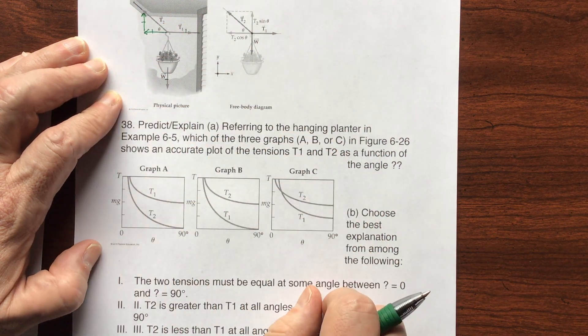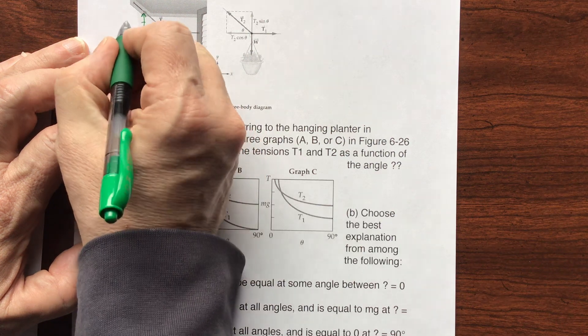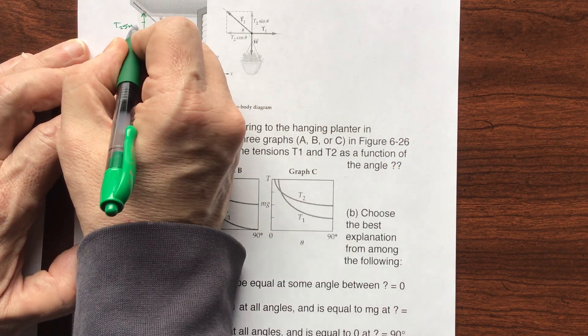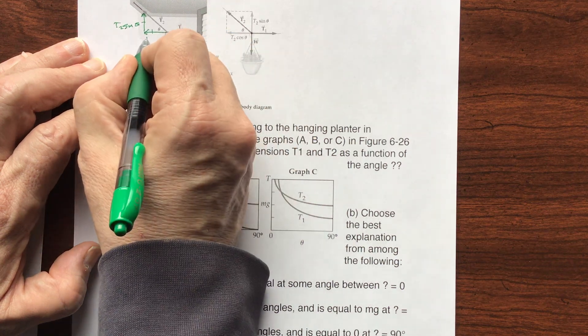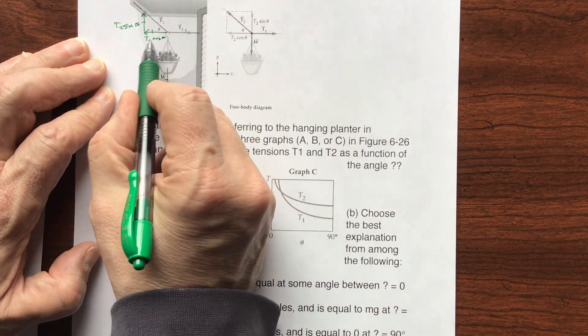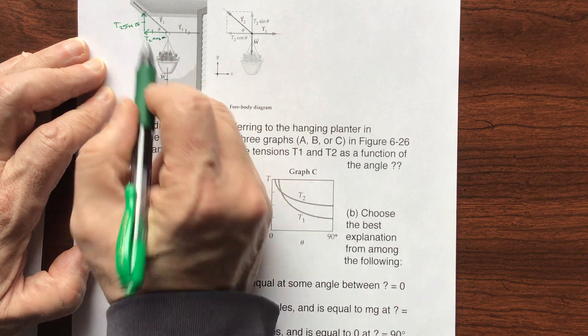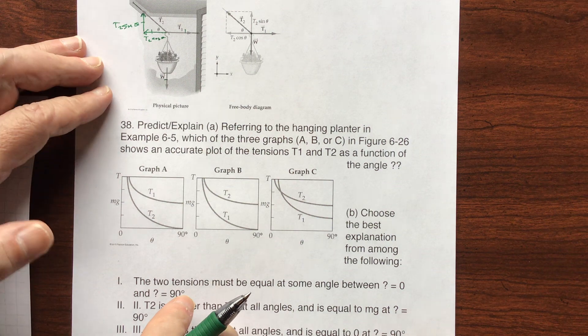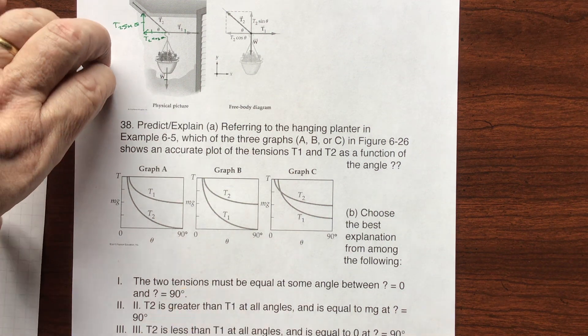So this is going to balance with this, and this is going to balance with this. Does that make sense? All right, so this is going to be T2 times the sine of theta, and this is T2 times the cosine of theta. So these two cancel each other out. These two equal each other.